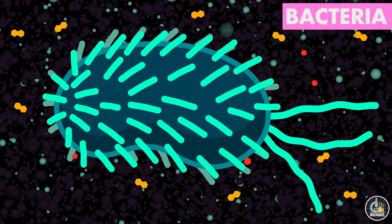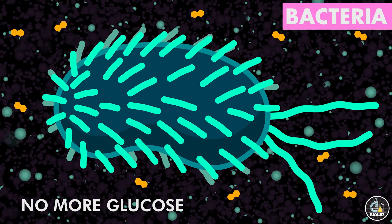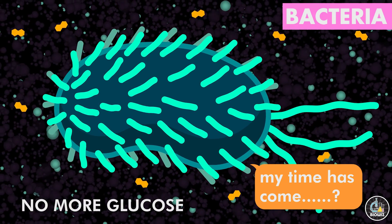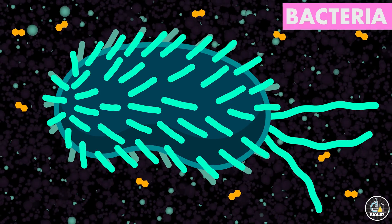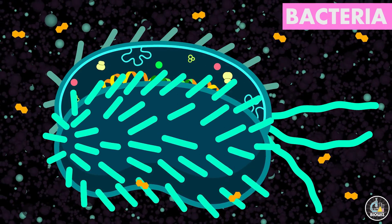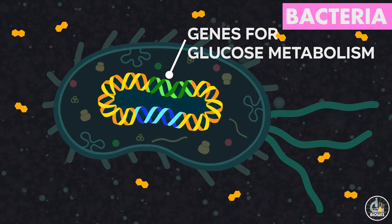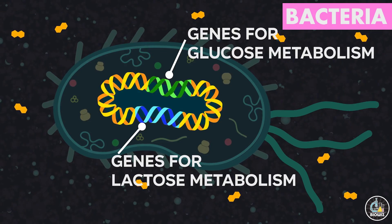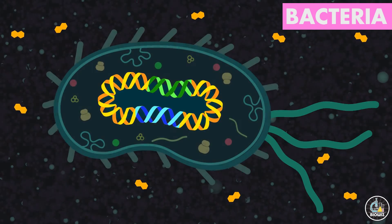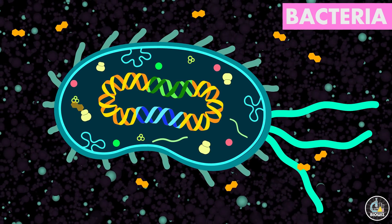But what happens when the glucose is not available or it is totally consumed? Does the bacteria simply accept its fate and wait to starve to death? The answer is no. This bacteria refuses to die, and during the course of evolution it has evolved strategies to deal with such situations. In the absence of glucose, it can break down other carbohydrates like lactose to meet its energy requirements.